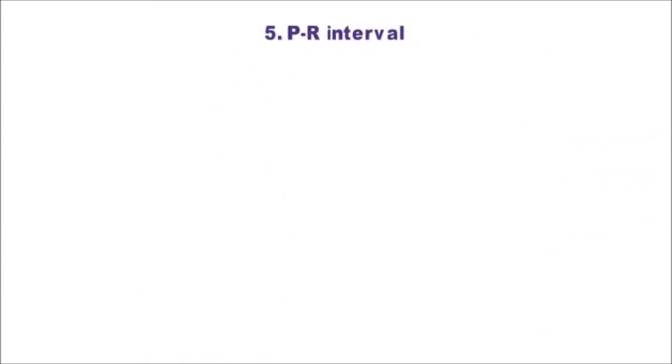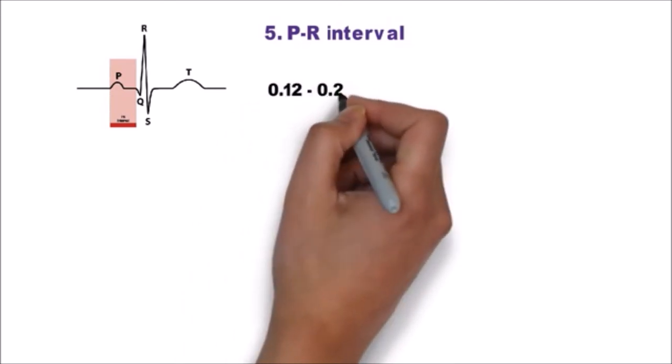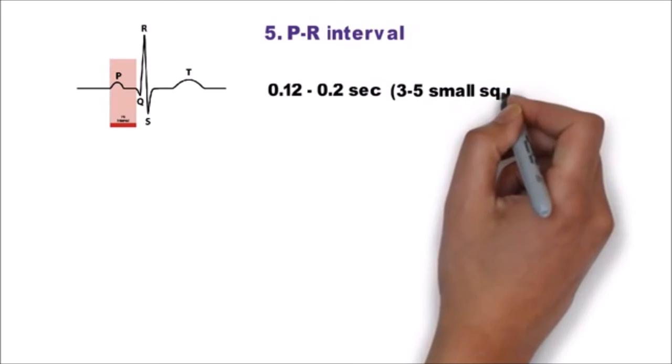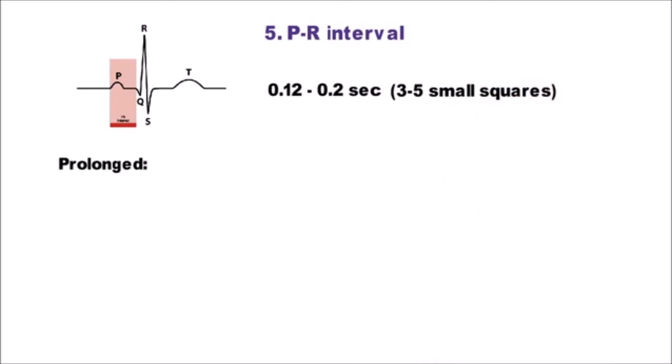Step 5 is PR interval. It is from the start of p-wave to the start of q-wave. That is why some call it as PQ interval. Normally it is 0.12 to 0.2 seconds, that is 3 to 5 small squares. And it is prolonged in AV blocks.